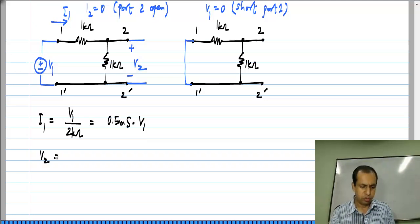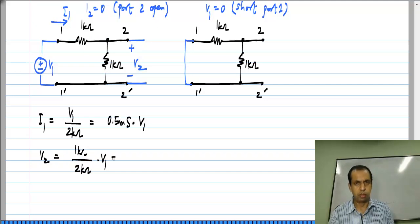Similarly, V2 is the result of voltage division between these two resistors. So, we get 1 kilo ohm by 2 kilo ohm times V1 or simply half of V1.